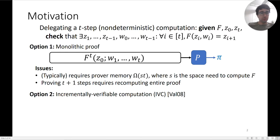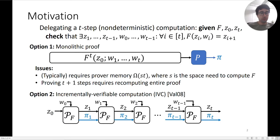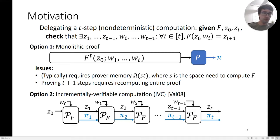To avoid these issues, Valiant suggested in 2008 a notion called incrementally verifiable computation. You take as input z0 and w0 into the prover, the prover produces a proof along with the next state z1, which you then feed again into the prover along with w1, and you get a new proof z2, π2, and so on. You do this until you end up with the final state zt and the final proof πt that attests to the correctness of the entire computation.